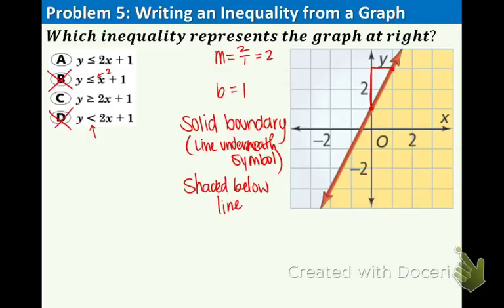That means we want to have a less than or equal to symbol because the numbers that are smaller than the 2x plus 1 are in the solution area. So that means we want to have a less than or equal to symbol. That gets rid of option C. And our remaining option is y is less than or equal to 2x plus 1.